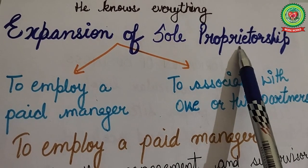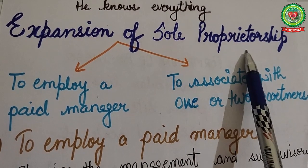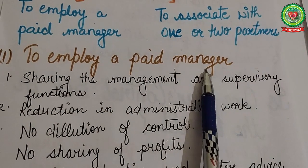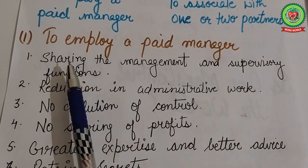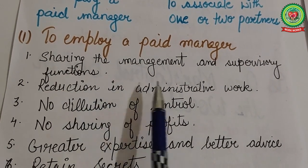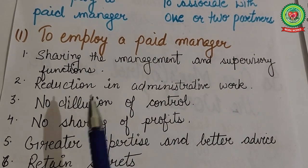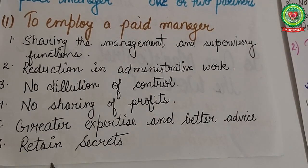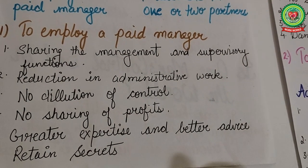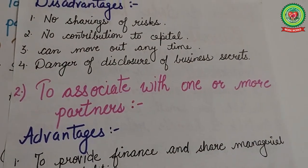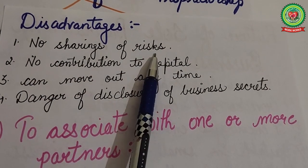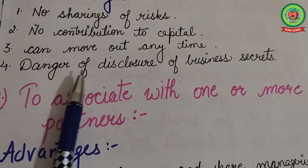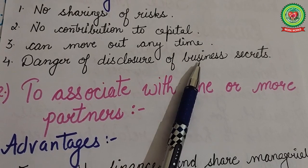The next topic is expansion of sole proprietorship business. To expand, the sole proprietor has two options: employ a paid manager, or associate with one or more partners. The benefits of employing a paid manager include sharing of management and supervisory functions, reduction in administrative work, no dilution of control, no sharing of profits, greater expertise, better advice, and retention of business secrets. Disadvantages include no sharing of risks, no contribution of capital by the manager, the manager can leave anytime, and there is a danger of disclosure of business secrets.